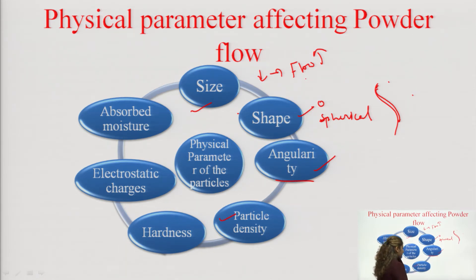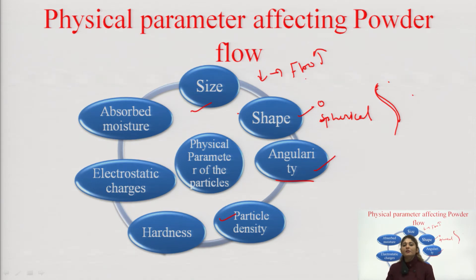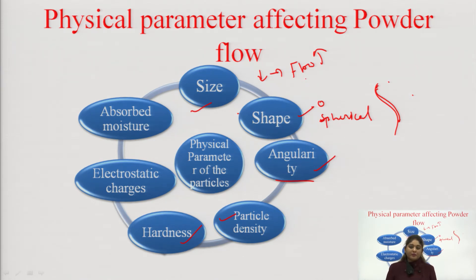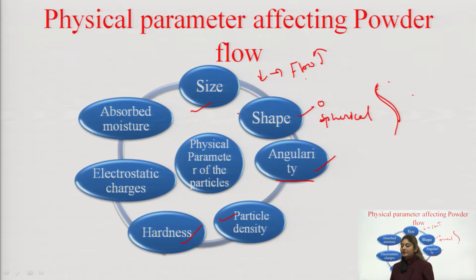Next is particle density. Particle density tells you how densely the particles are packed. If they are densely packed, flow properties are hindered, so the powder should be freely flowing. Next is hardness. If your powder is hard, its flow properties are affected, resulting in a hard tablet. A hard tablet decreases absorption and dissolution — because hardness increases, dissolution does not happen, so drug absorption is hindered. Hardness is therefore a very important parameter.